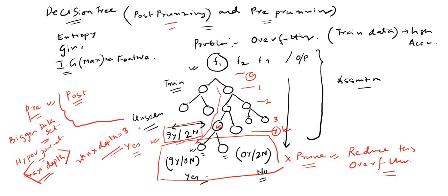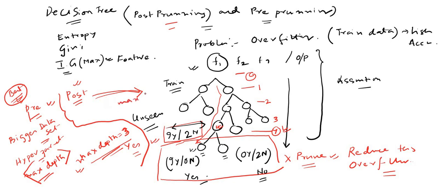For pre-pruning you don't need to give a definitive number manually. You will do hyper parameter tuning and from that understand what max depth to select — this is probably the best approach. Post pruning, on the other hand, is exactly like we explained: you first build your tree, then visually understand that you probably don't need to go that far, and you decide, for example, max depth equal to two. That is called post pruning.